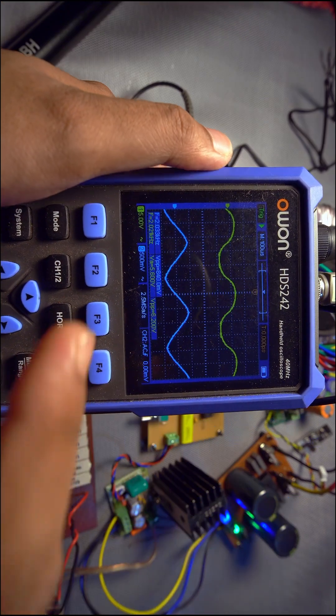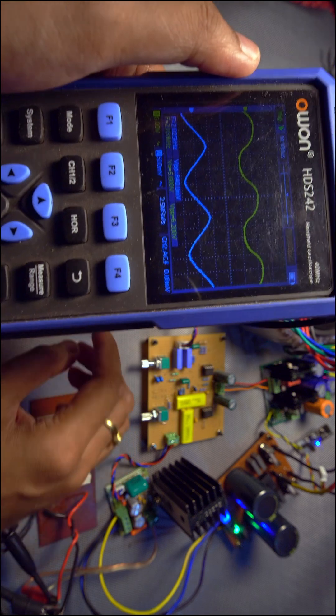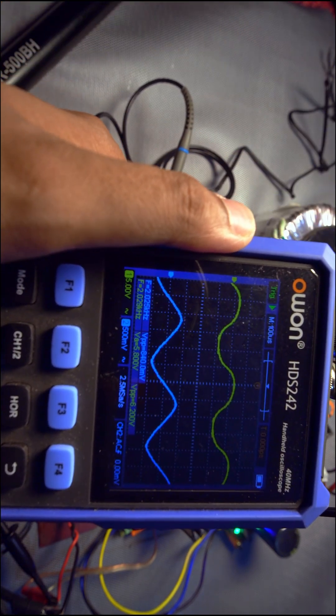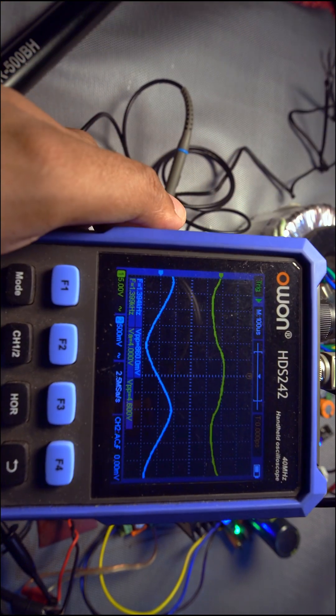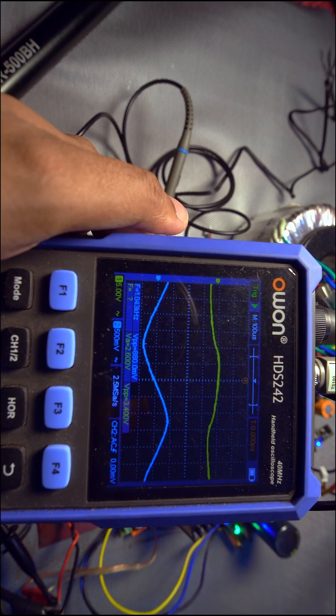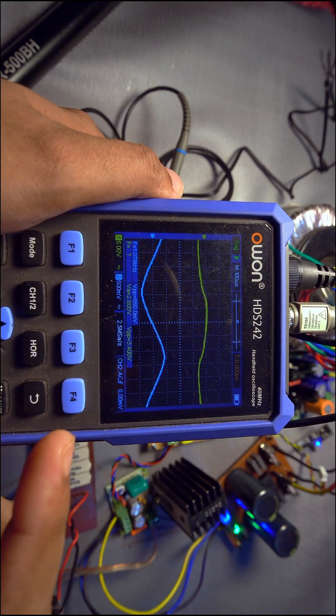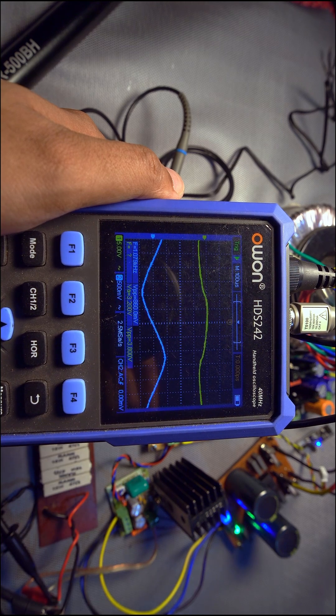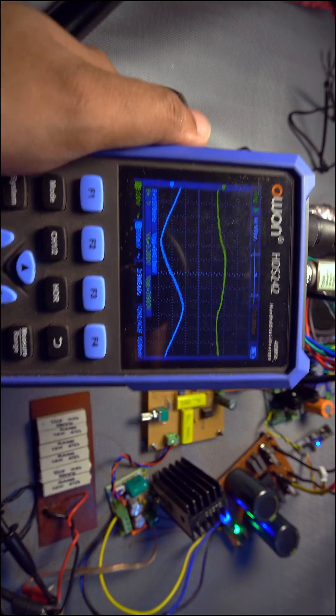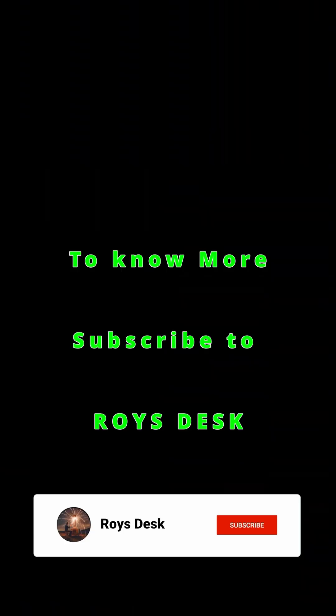I can again reduce the frequency here. I can make it one half of the 2 kHz, that is again one octave down, 1 kHz, and we can again check the voltage. 3.6 volts peak-to-peak. That is again kind of half of what we got at 2 kHz.